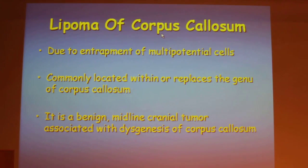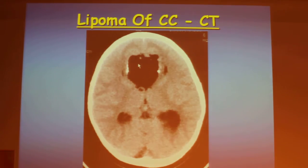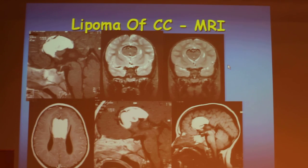Lipoma of the corpus callosum is a misnomer. It is commonly located within or replaces the genu of the corpus callosum. Since it is fat content, it would be hyperechoic on ultrasound, show fat density on CT, and be T1 hyperintense — then suppressed on fat-suppressed sequences.